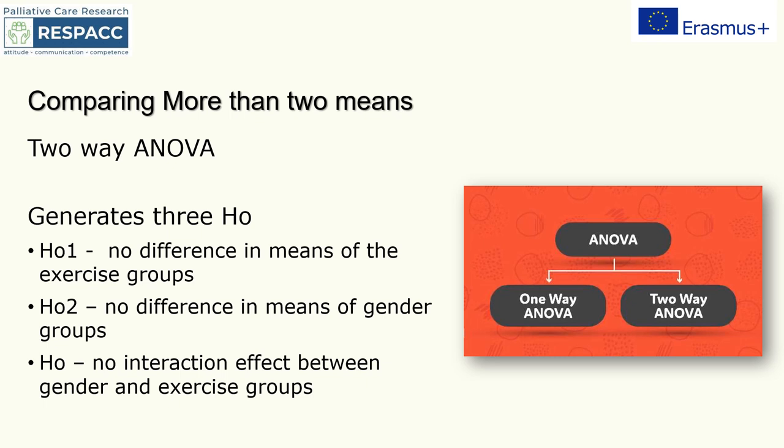Where we have two independent variables and more than two groups, we can use the two-way ANOVA. In our example, if we look at gender and exercise on fatigue, we can use the two-way ANOVA. This generates three hypotheses: null hypothesis one is that there's no difference in the means of the exercise groups; null hypothesis two is that there's no difference in the means of gender groups; and null hypothesis three is that there's no interaction effect between gender and exercise. We still need the same assumptions as a one-way ANOVA — independent data, normal distribution and homogeneity of variance. There's no real non-parametric equivalent, but if we collect 30-plus observations in each group, we can use a two-way ANOVA with non-parametric data.